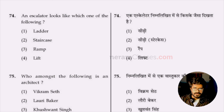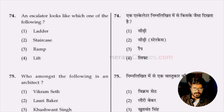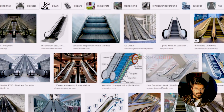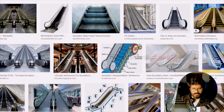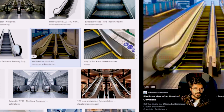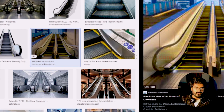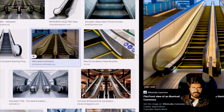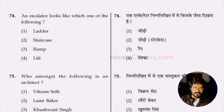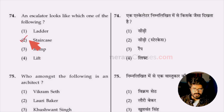Question 74: an escalator looks like which of the following — a ladder, staircase, ramp, or lift? As seen in shopping complexes and malls, an escalator is a moving staircase. The look of an escalator resembles a staircase. Option two, staircase, is the answer.